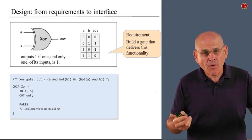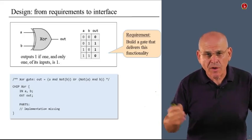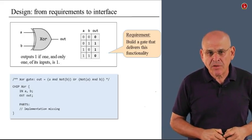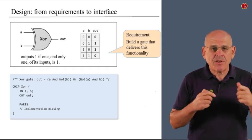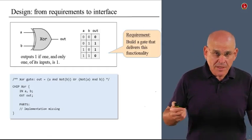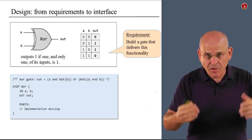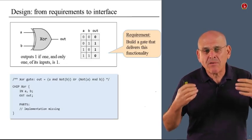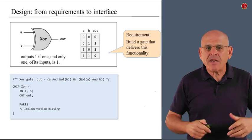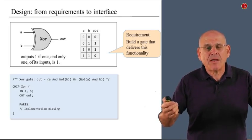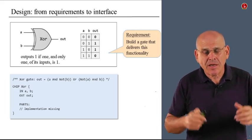We start the HDL program or the HDL file with some documentation, free form—you can write whatever you want there—which describes what the gate is supposed to do. Then we specify the name of the chip, the names of the inputs of the chip, and the names of the chip's output. All this information—the name of the chip and the names of its inputs and outputs—is typically given to you. It's part of the chip's contract. So you simply write it up using the syntax, and then you write the magic word PARTS, which describes that here begins the segment of your program in which you're going to describe how this chip is actually designed.